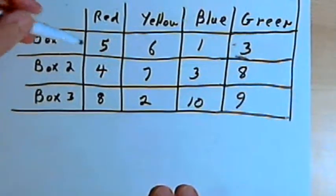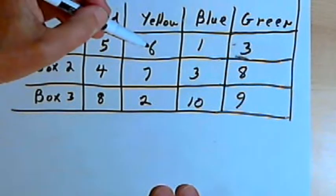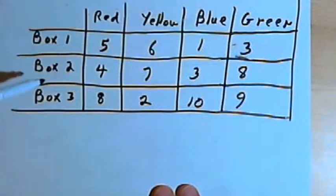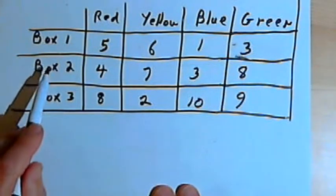So for instance, box 1 contains 5 red marbles, 6 yellow marbles, 1 blue marble, 3 green marbles, and we have the same kind of information for the other two boxes.